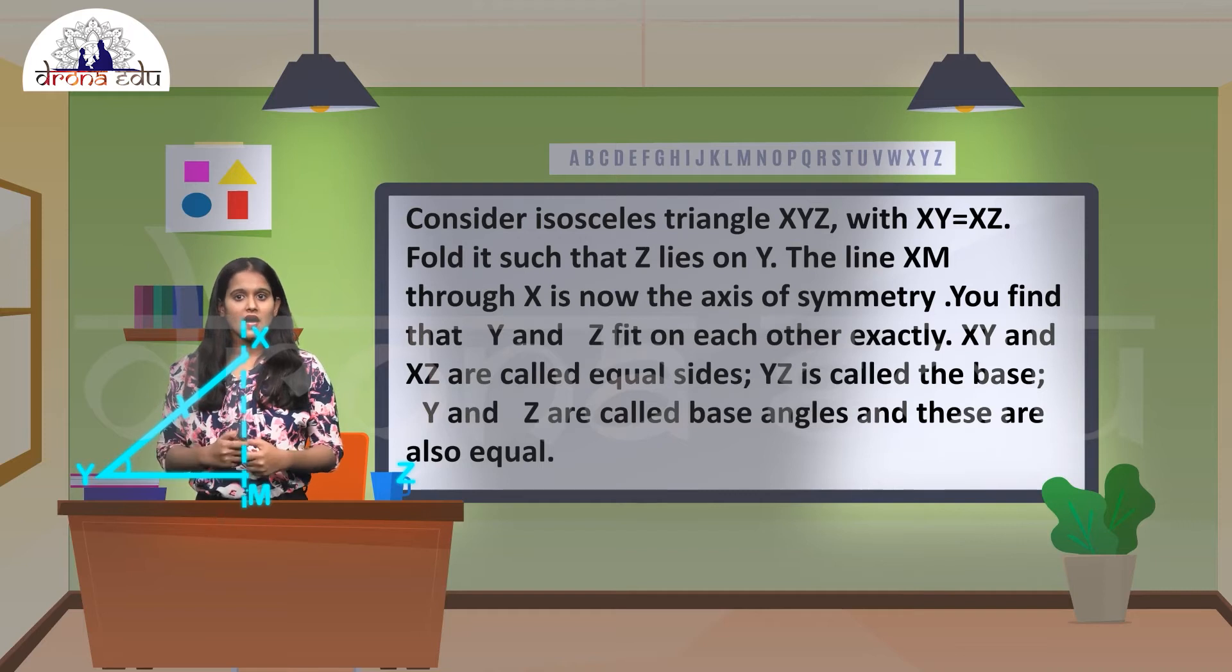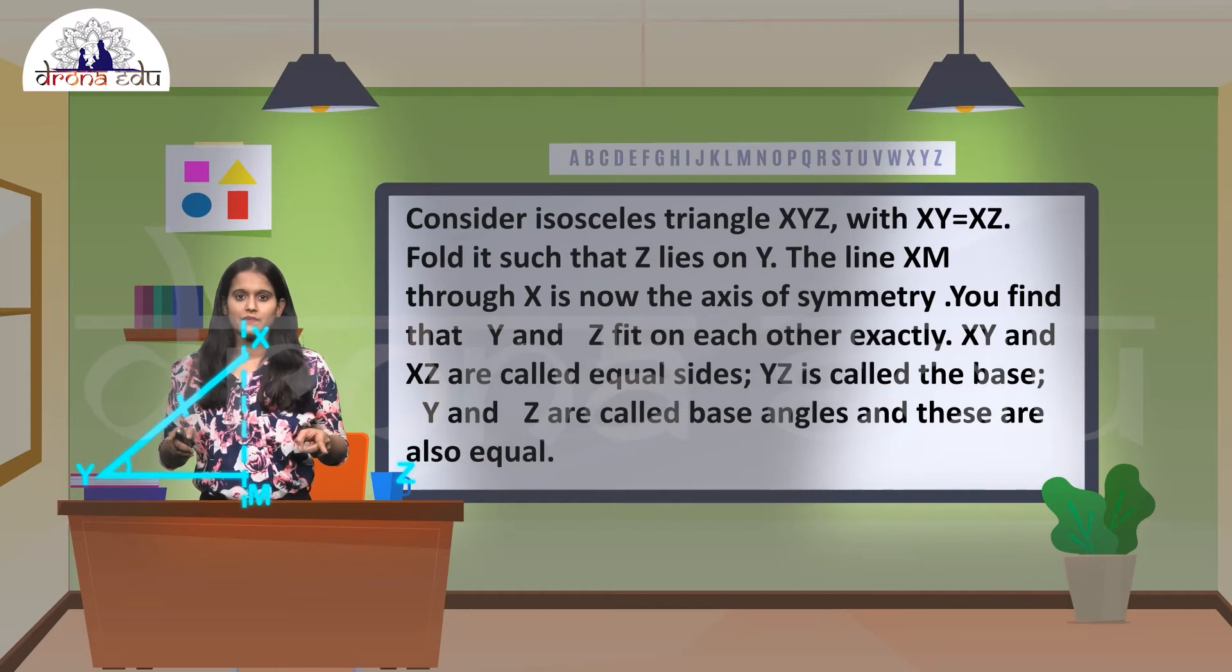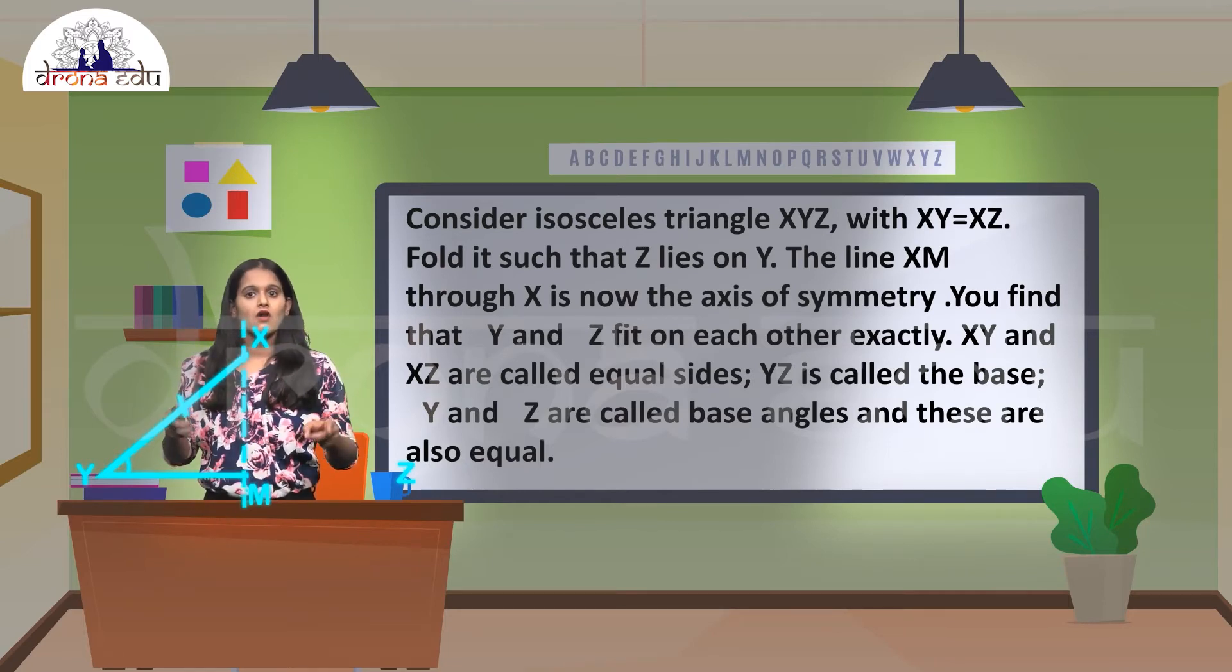So here, the line XN through X is now the axis of symmetry. You find that angle Y and angle Z will fit on each other exactly. Not only that, XY and XZ also. They are called equal sides.